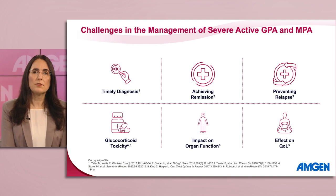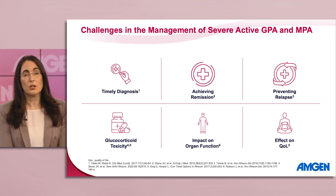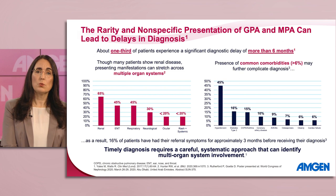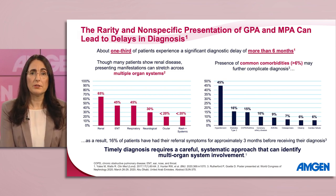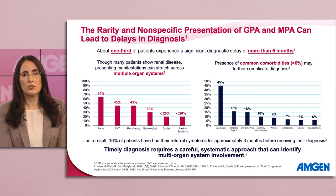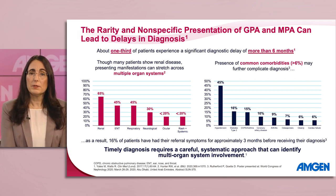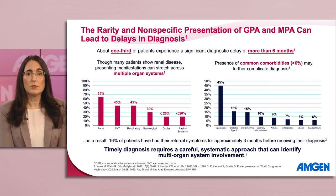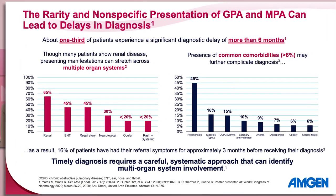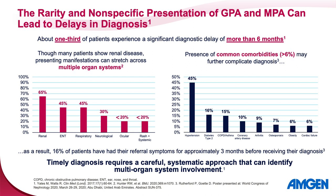Despite improvements in the knowledge and diagnosis of GPA and MPA, there are several challenges to disease management we may encounter. These challenges may include timely diagnosis, achieving and maintaining relapse-free remission, toxicity from glucocorticoids, impact on organ function, and effect on patient quality of life. Timely diagnosis remains a challenge for patients with GPA and MPA, often due to the relative rarity of the disease and nonspecific presentation.